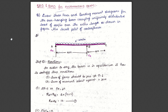In this video, we shall see a numerical problem on overhanging beam to draw shear force and bending moment diagrams. Let us see the question directly: draw shear force and bending moment diagrams for the overhanging beam carrying a uniformly distributed load of 2 kN per meter over the entire length as shown in the figure. Also locate the point of contraflexure. We shall see what the point of contraflexure is a little later. As of now, let us try to draw shear force and bending moment diagrams.